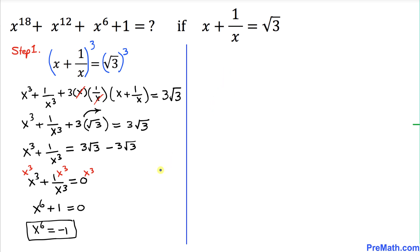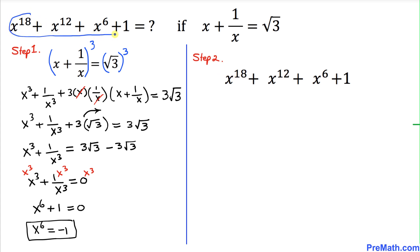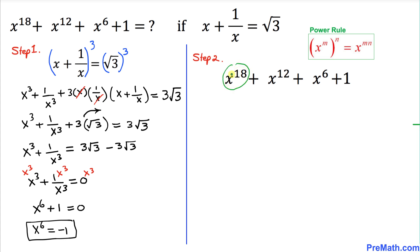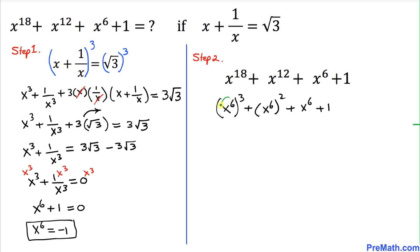Now let's move on to the right hand side as we are running out of space. In this next step, I have copied down the expression x power 18 plus x power 12 plus x power 6 plus 1, and we are going to find its value. I am going to rewrite x power 18 as x power 6 to the power 3, and x power 12 as x power 6 to the power 2, plus x power 6 plus 1. We already know from the previous step that x power 6 equals negative 1.